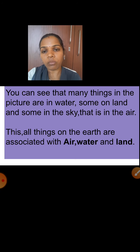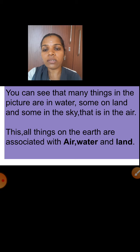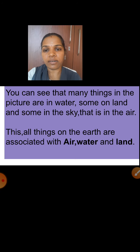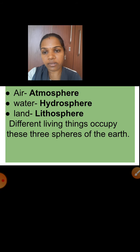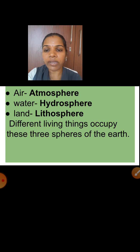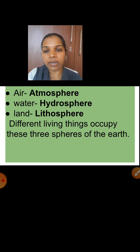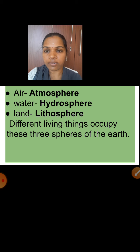Air is earth's atmosphere. Water — that is earth's hydrosphere. And land — that is the lithosphere. Different living things occupy these three spheres of the earth: the atmosphere, the hydrosphere, and the lithosphere.